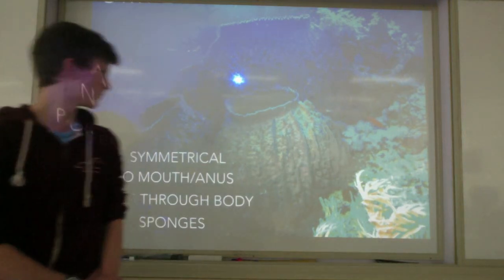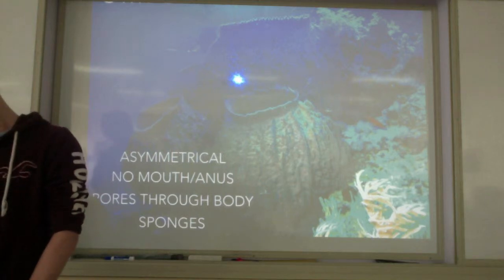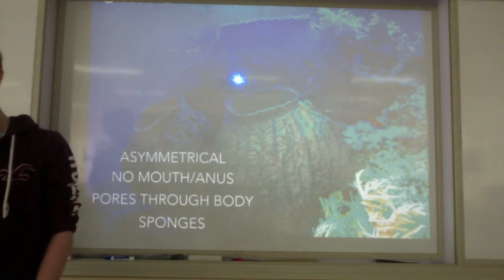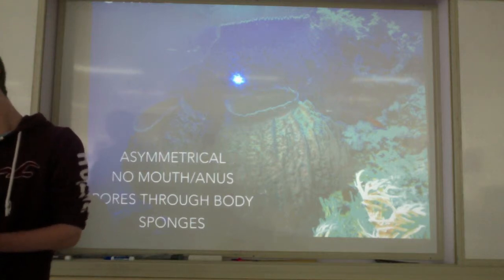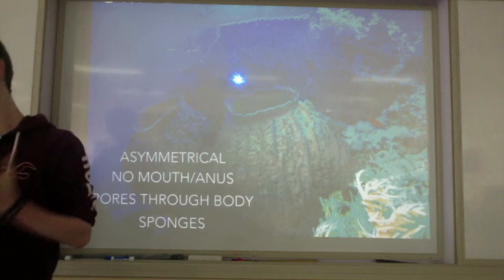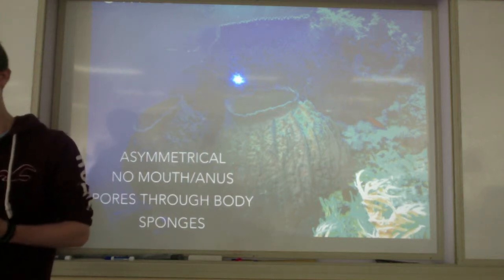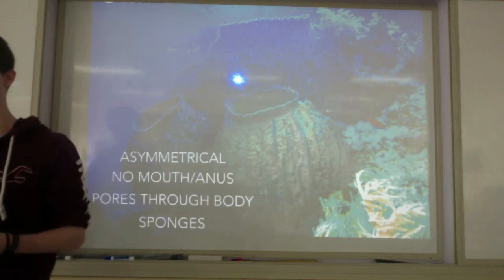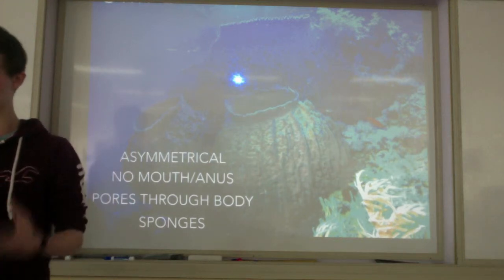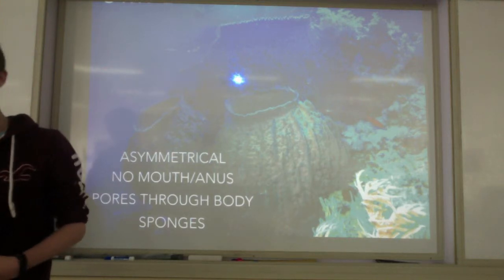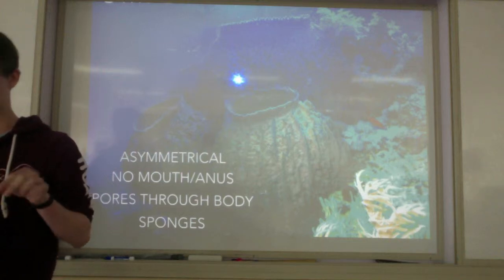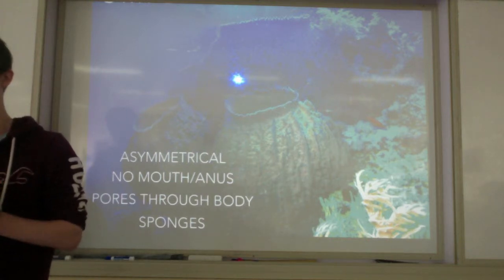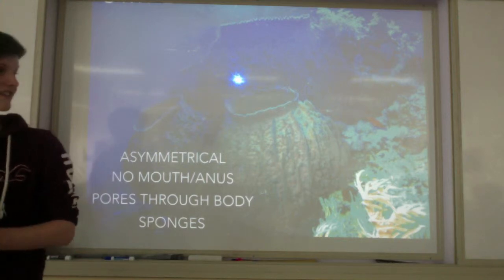The five phyla we have to know start with Porifera, which are sponges. They're asymmetrical, they have no mouth or anus, and a defining feature is that they have pores throughout their body. Interestingly, there are carnivorous sponges that have long branches of tiny microscopic hooks that capture small crustaceans and suck out their insides with enzymes, leaving behind only husks. So watch out for killer sponges.